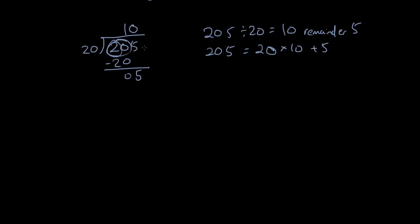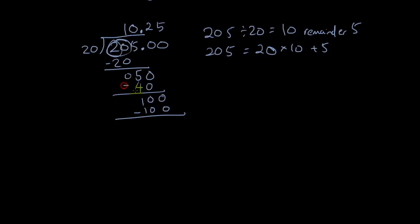You can also keep going: put a decimal point and add a 0. Bring down the 0: 20 times 2 is 40, and 50 minus 40 is 10. Put another 0 and bring it down: 20 times 5 is 100, 100 minus 100 is nothing. So the final answer is 205 divided by 20 equals 10.25. All three statements we've written are correct.